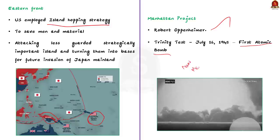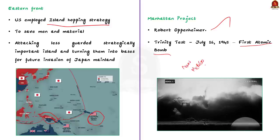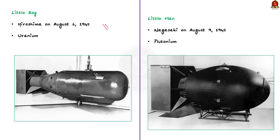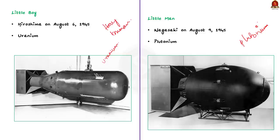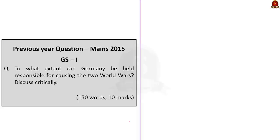To bring the war to a quick end, US President Harry Truman decided to use the atomic bomb on Japan. The uranium-based 'Little Boy' was dropped on Hiroshima on August 6, 1945, and the plutonium-based 'Fat Man' was dropped on Nagasaki on August 9, 1945. The bombings resulted in significant destruction and loss of life. Japan surrendered on August 15, 1945, effectively ending World War II. These are all some of the important events that happened during World War II.